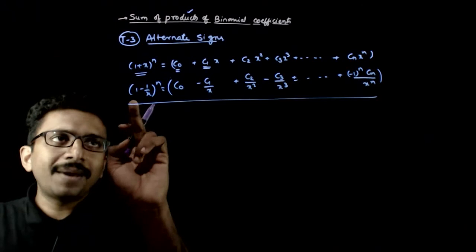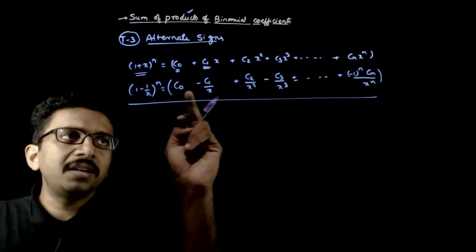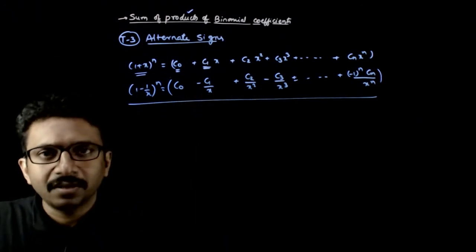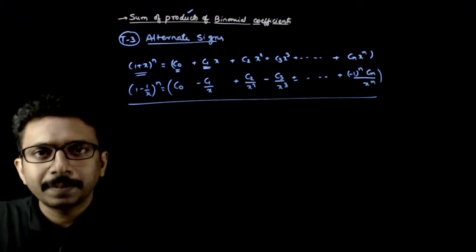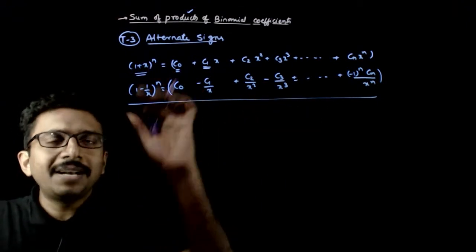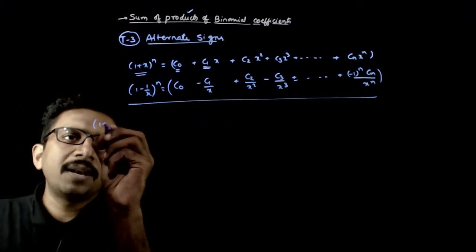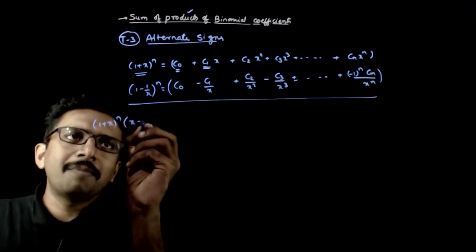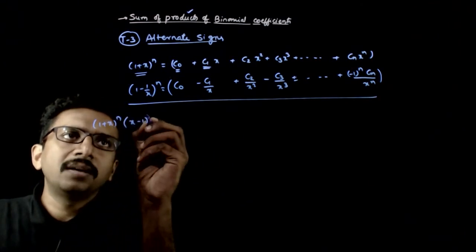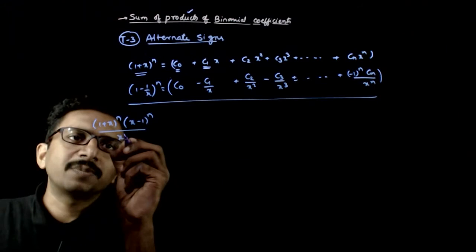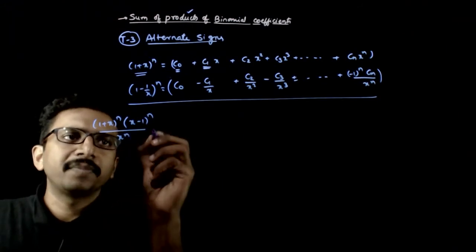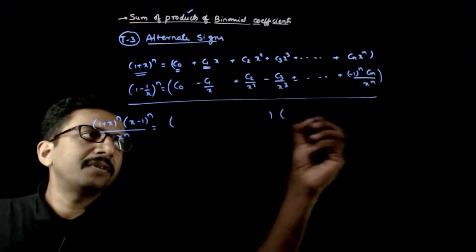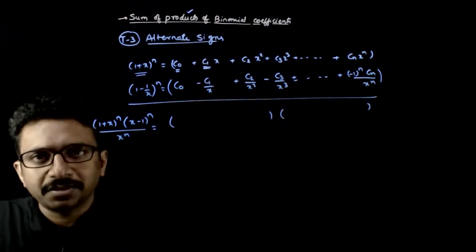The expansion of (1 - 1/x)^n is c0 minus c1·x plus c2·x² minus c3/x³, and so on. Now if you multiply these two — that is (1+x)^n into (x-1)^n divided by x^n — that is equal to the multiplication of these two expressions.